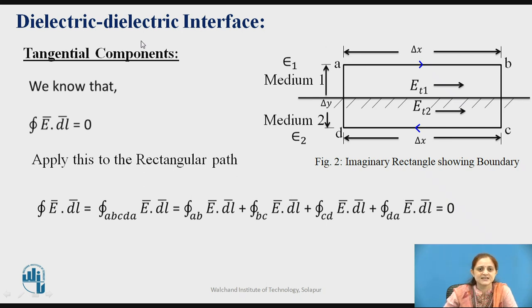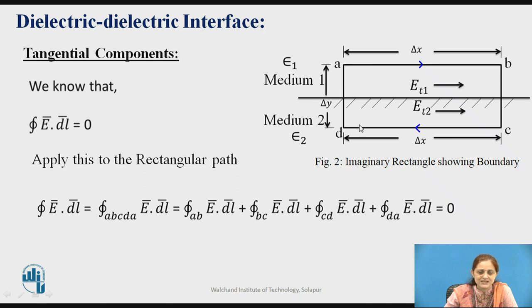Let us consider the dielectric-dielectric interface — that is, medium 1 and medium 2 both having dielectric media. Medium 1 has permittivity ε₁ whereas medium 2 has ε₂. Consider a rectangle at the boundary. The electric field is passing from medium 1 to medium 2. We know that the closed line integral E-bar·dL-bar is equal to zero. Apply this to the rectangular path.